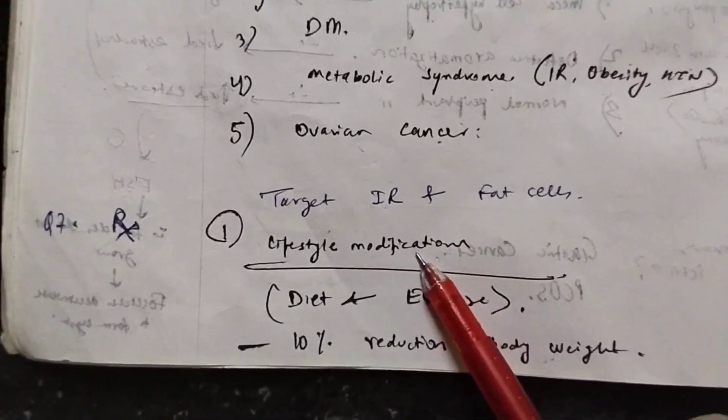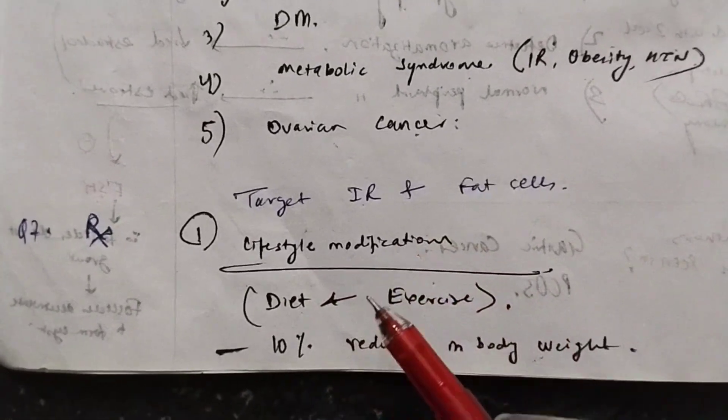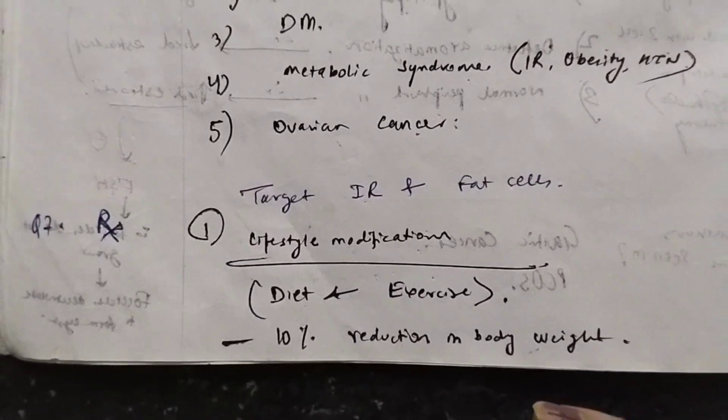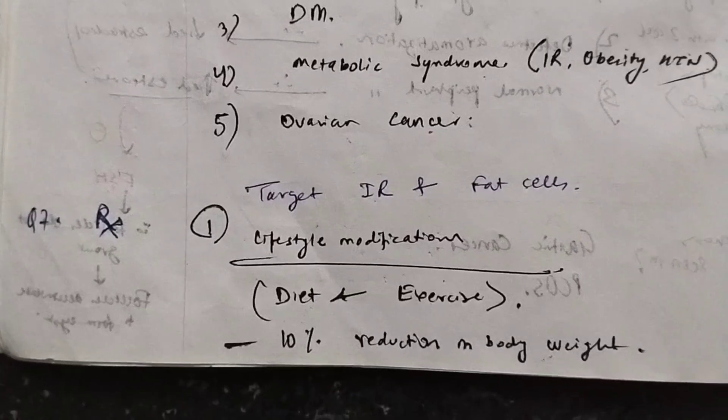Under non-pharmacological management, there should be lifestyle modifications which will include healthy diet and exercise. Why is this important? Because you want to reduce 10% of the body weight. Studies have shown that following this regimen improves your anovulation and oligo-ovulation.